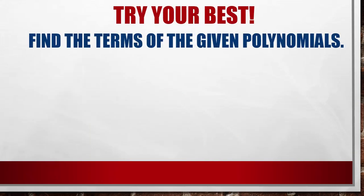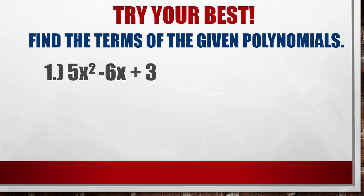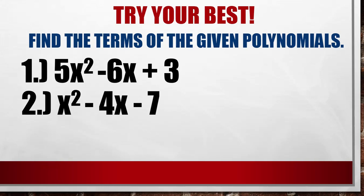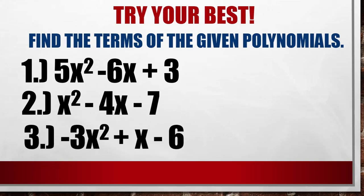Let's try to find the terms of the given polynomials. Number one: 5x² − 6x + 3. The first term is 5x², the second term is negative 6x, and the third term is 3. Number two: 5x² − 4x − 7. The first term is x², the second term is negative 4x, and the third term is negative 7.